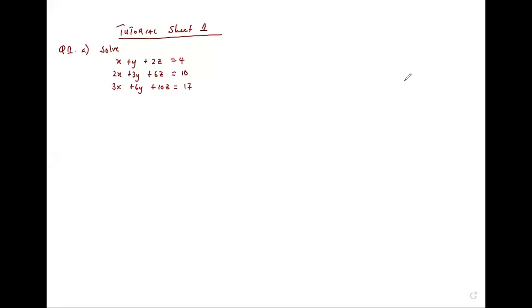To solve this, you collect from the left the coefficients of x, y, z. For the first equation we have 1, 1, 2 — the coefficients of x, y, z. For the second equation, x, y, z. Then you demarcate and get the right-hand side.